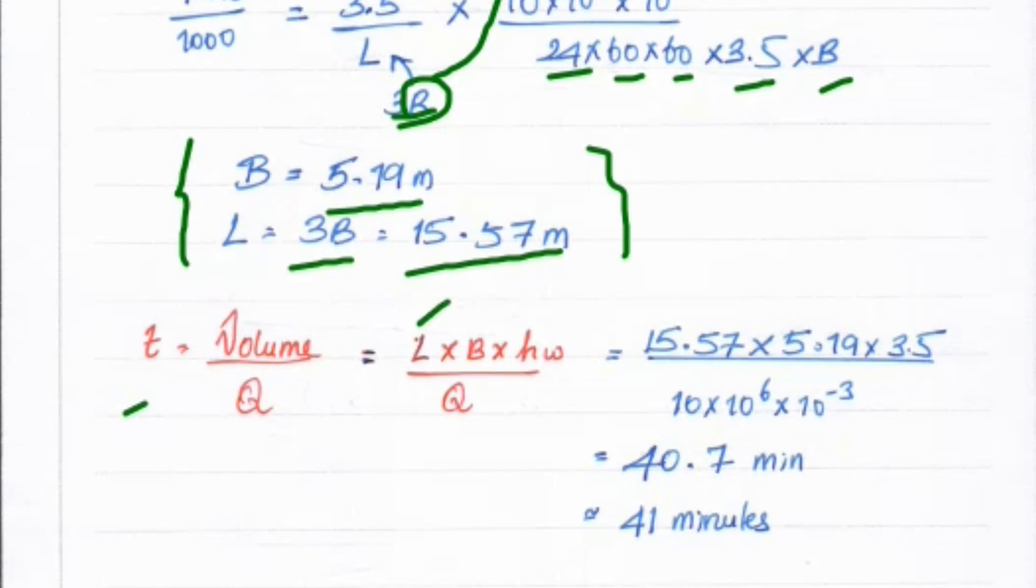Volume = L × B × Hw. L = 15.57, B = 5.79, Hw = 3.5, divided by the quantity of water = 10 × 10⁶ × 10⁻³. Solving this we get 40.75 minutes, which is 41 minutes. The detention time T = 41 minutes.